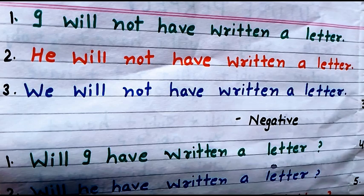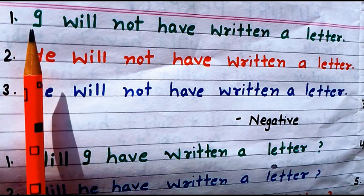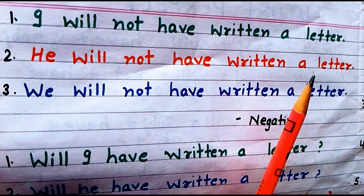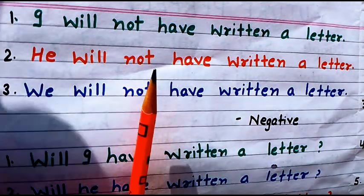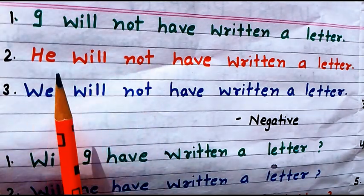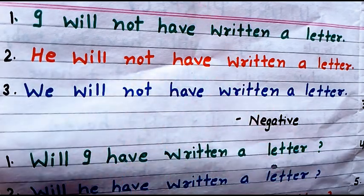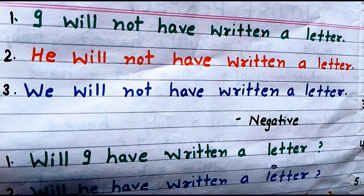Next is negative. How do we form a sentence with negative rules? For example: 'I will not have written a letter' — meaning I will not write a letter. When negative sentences come, the combination of 'will have' breaks and we insert 'not'. So: 'I will not have written a letter', 'He will not have written a letter', 'We will not have written a letter' — meaning we will not write a letter. Whether it is 'I' or 'we', we use 'will' throughout.